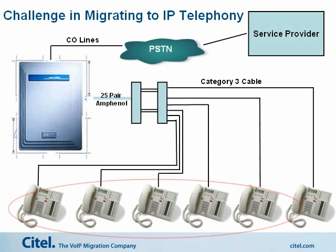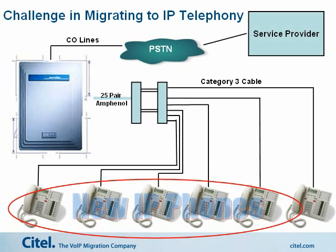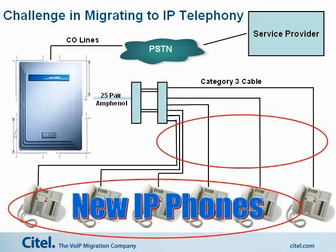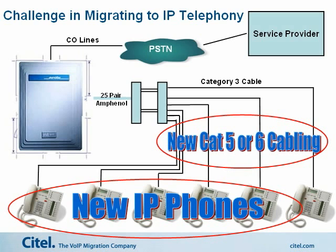For traditional IP Telephony implementation, the old digital handsets are replaced with new IP phones. However, in order to support IP phones, new Category 5 or 6 data cabling must be installed.